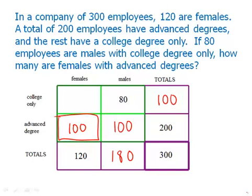Let's just check and make sure that this works. We look down the female column. Blank plus 100 should equal 120, so that would mean that this equals 20. Then we add across that top row, 20 plus 80 equals 100. Everything checks. And so, indeed, there are 100 females with advanced degrees in this company.